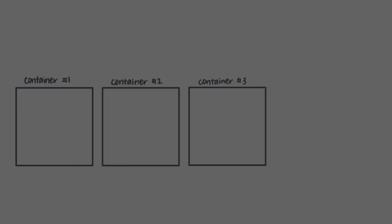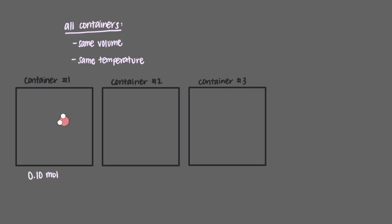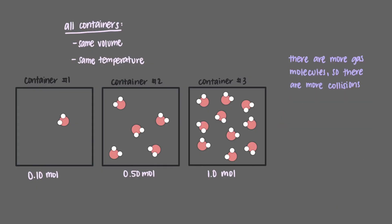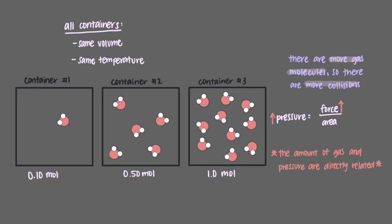Now let's take a look at three new containers. This time, all of them will have the same volume and be at the same temperature, but there will be different amounts of gas in each container: 0.1 moles, 0.5 moles, and 1 mole of gas. Increasing the amount of gas in a same-sized container means there are more gas molecules able to collide with the walls, so the number of collisions increases. Because the number of collisions increases, pressure will increase as well. So the amount of gas and pressure are directly related, assuming the volume of the container and the temperature are constant.